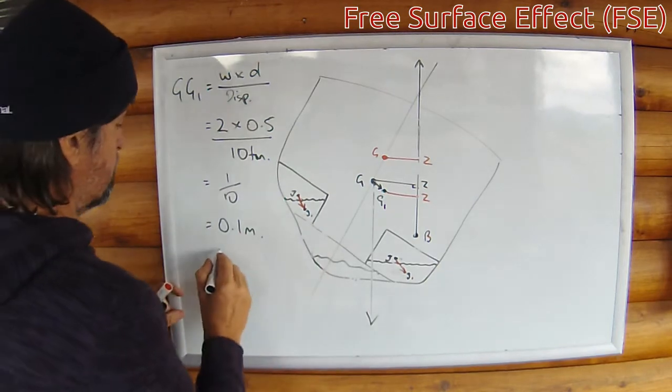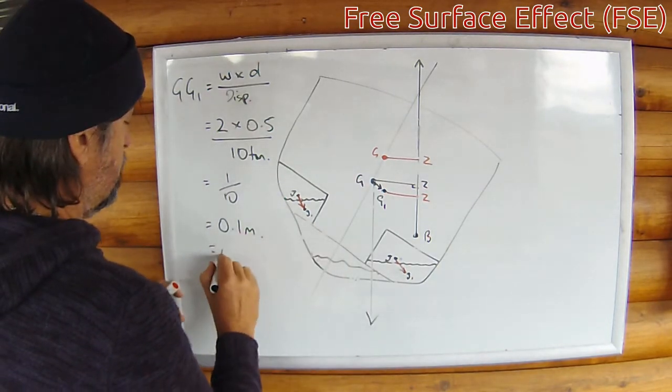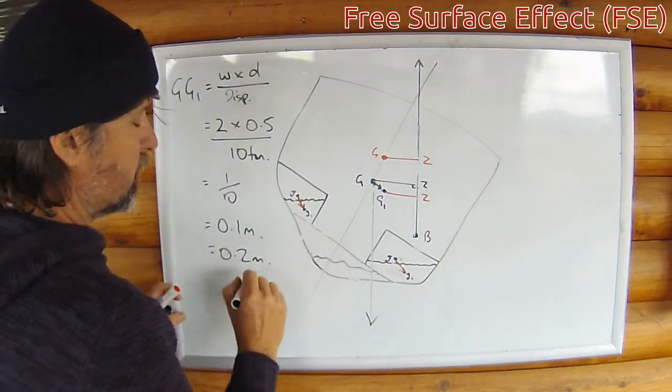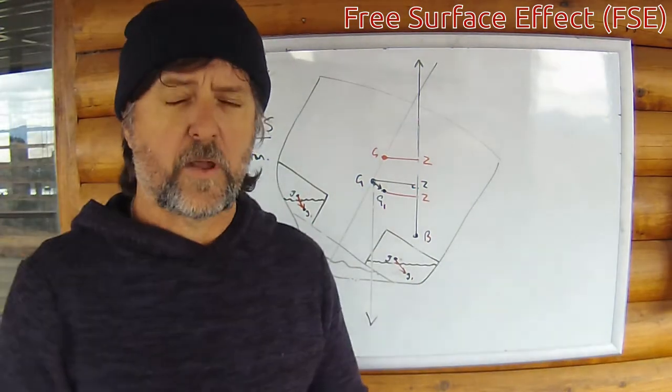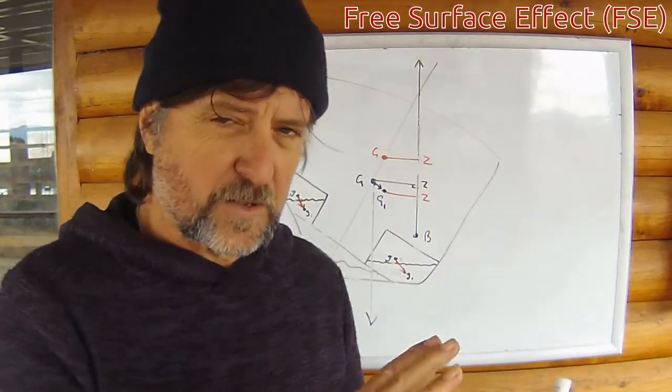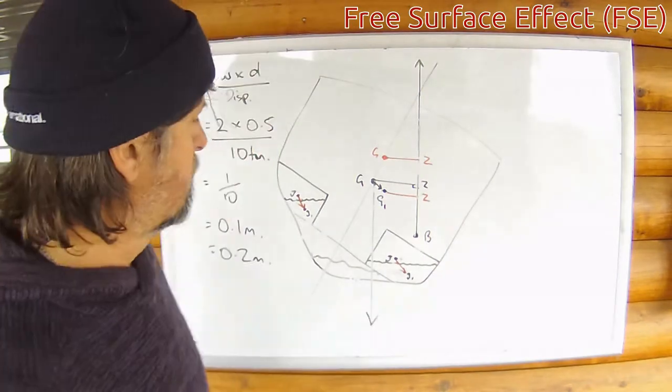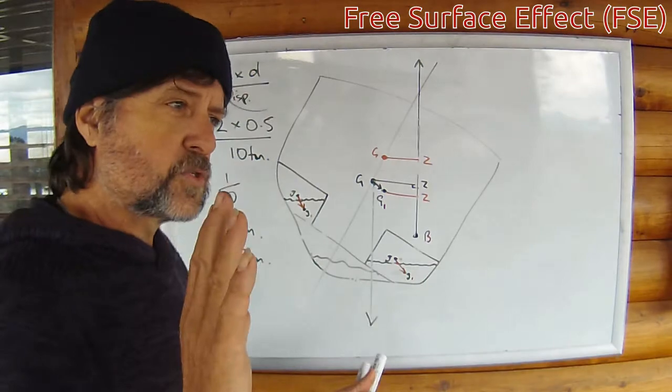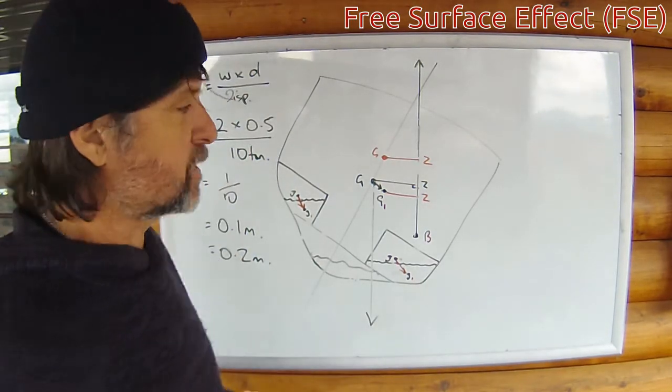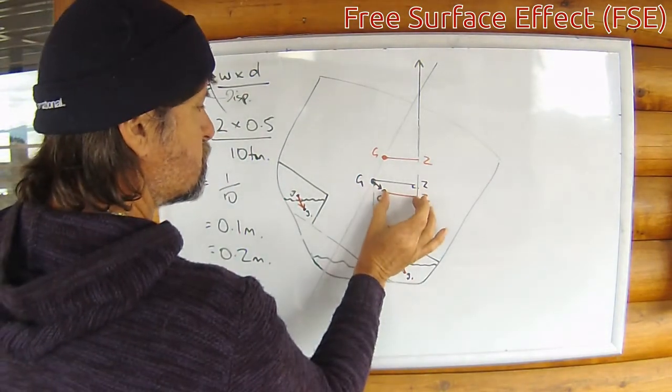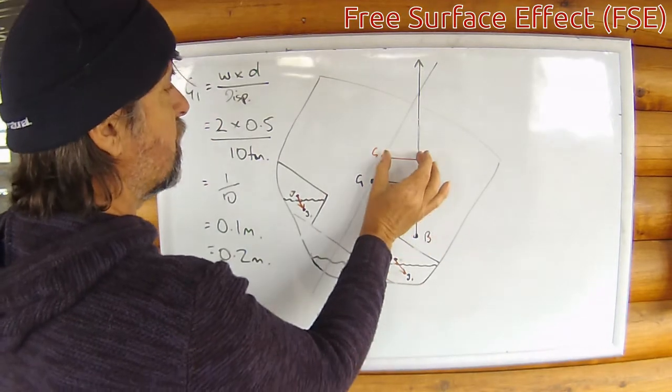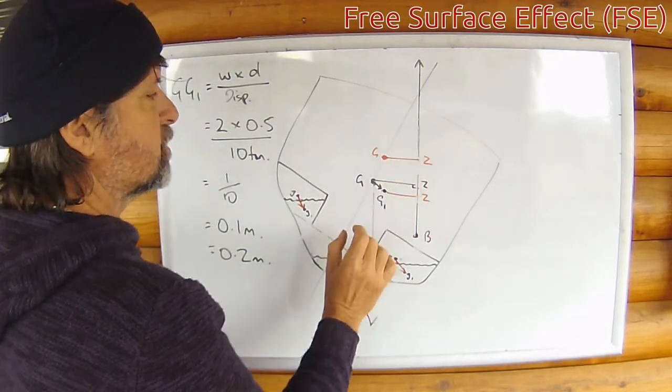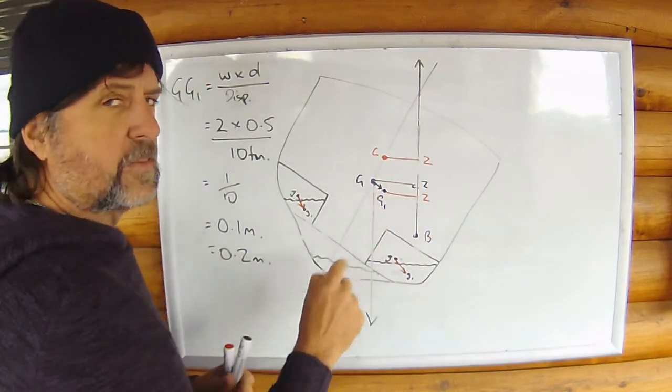Now we multiply that by two of course, because there's two tanks, we're going to end up with 0.2 meters or 20 centimeters. The center of gravity of your ship has shifted 20 centimeters from where it was. It's easier for us to imagine though, because we've looked at the metronome, we've looked at all these examples. Now to just picture that reduced GZ that results, slide it upwards until it fits in the triangle. And then we take that measurement.